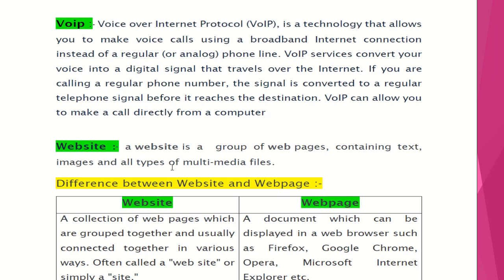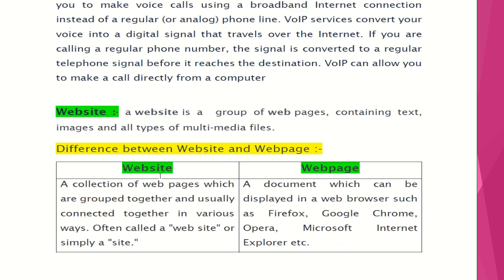Next is website. A website is a group of web pages containing text, images, and all types of multimedia files. There is a difference between a website and a web page. A website is a collection of web pages which are grouped together and usually connected in various ways, often simply called a site.